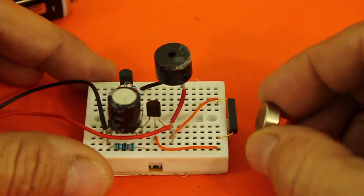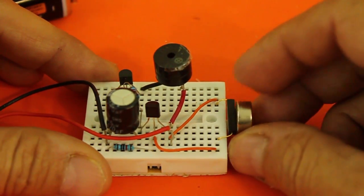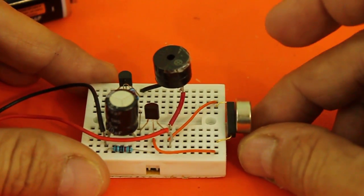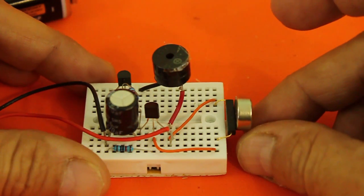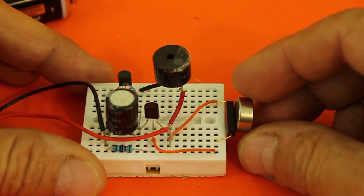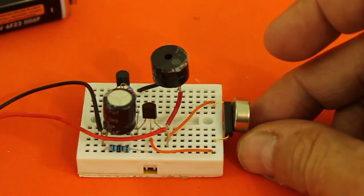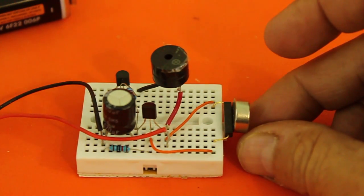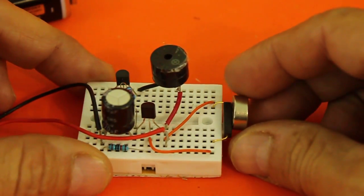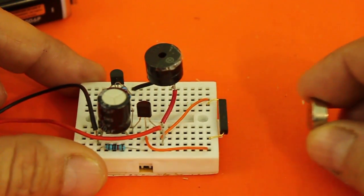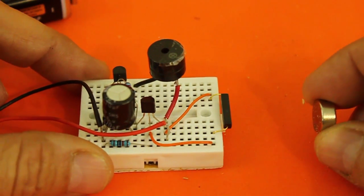So when your door is closed the magnet will be next to the reed switch and the alarm will be off. The moment you slide your window or open your door the magnet moves away and the alarm will sound.